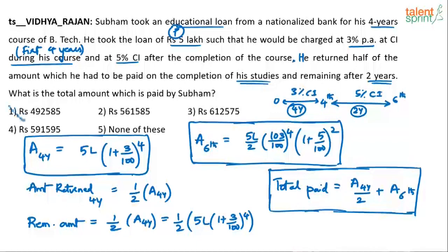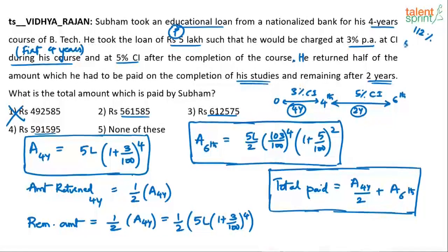One thing for sure — the answer cannot be 4,09,200, because when the principal itself is 5 lakhs, overall interest is going to be more than 5 lakhs. Using the simple interest case to eliminate options: 3% per annum for 4 years gives 12%, so the amount becomes 112%. He returned only half — 56%. On the remaining 56%, he was charged 5% per annum for 2 years, which is 10% of 56% = 5.6%.